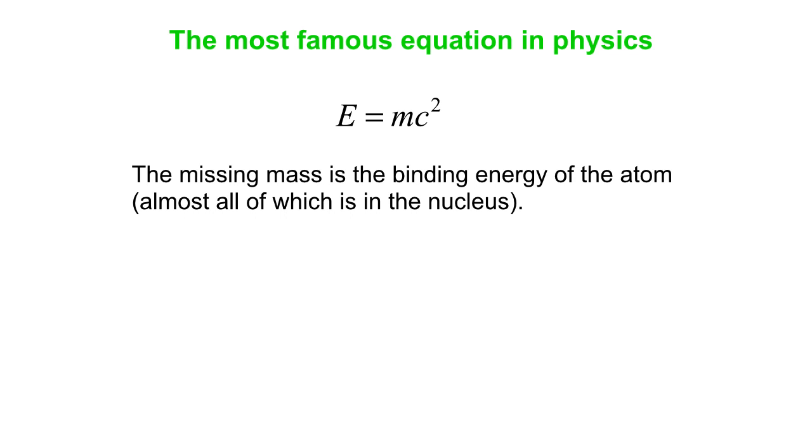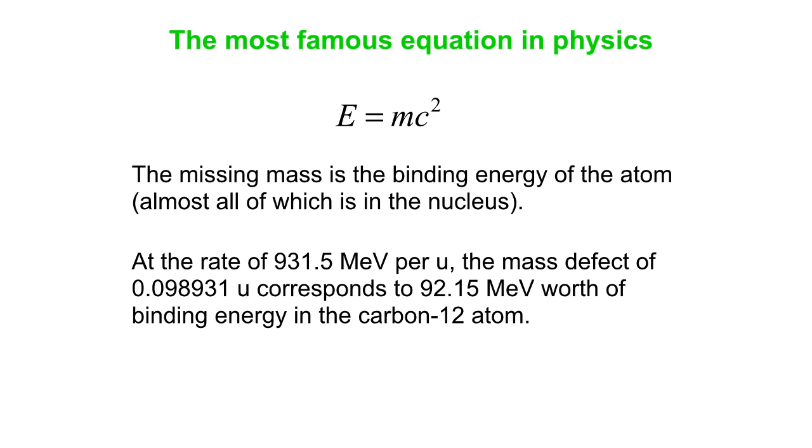That missing mass is associated with the binding energy of the atom. We've converted a little bit of mass into energy, and that's what keeps the nucleus together. Almost all of that's in the nucleus. Every U has an equivalent energy of 931.5 mega-electron volts. Multiply 0.098931 by 931.5 MeV per U, and you get 92.15 mega-electron volts of binding energy in the carbon-12 atom, way more than the several eVs the electrons are bound with.